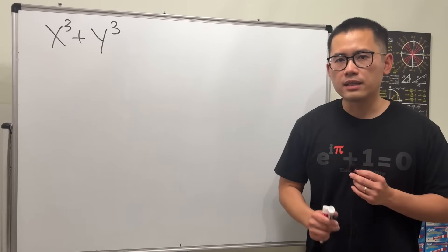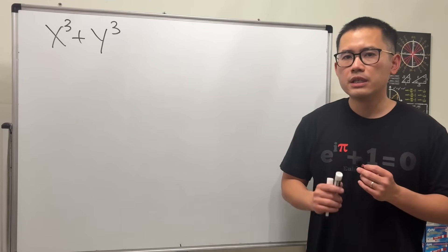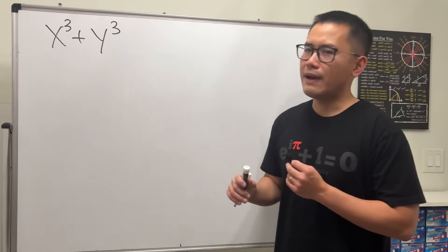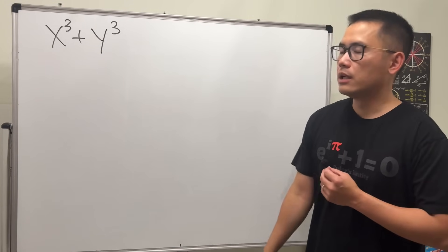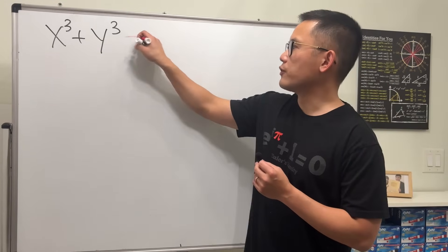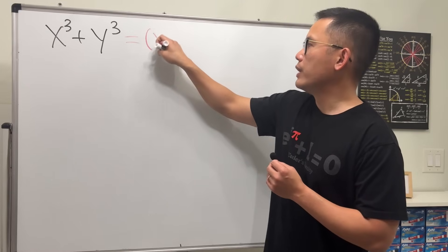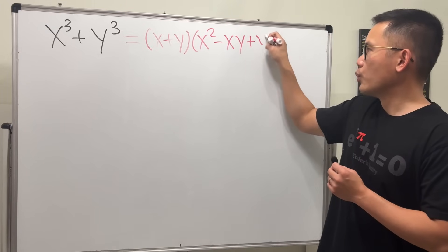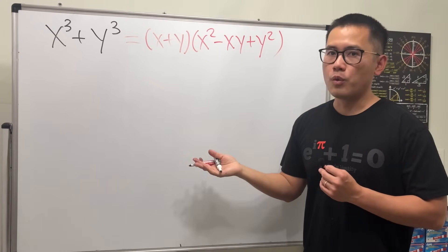One of the questions I got a lot when I teach algebra pre-calculus is, how come x cubed plus y cubed is factorable? And how do we do it? And of course, I can just show you guys the formula. This right here is equal to x plus y times x squared minus xy plus y squared, and then utilize the formula.